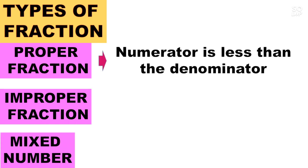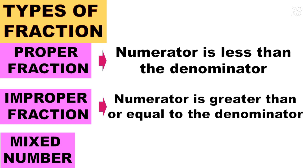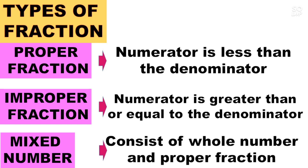Before we start with mixed numbers, let's recall the types of fractions. 1 is the proper fraction, 2 is improper fraction, and 3 is mixed number. Proper fraction — the numerator is less than the denominator, meaning the denominator is higher than the numerator. Improper fraction — the numerator is greater than or equal to the denominator. Mixed number — it consists of a whole number and a proper fraction.